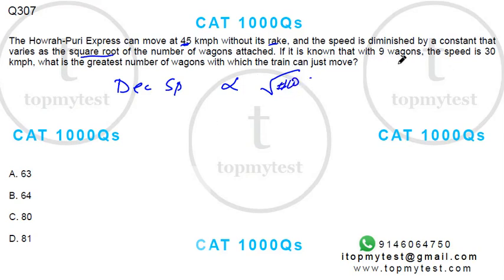It is known that with 9 wagons, which means 3 inside the square root, the speed is 30. Normal speed was 45, which means the drop is 15.